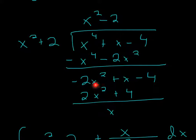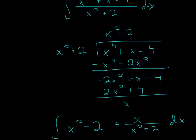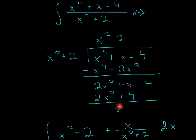The 2x squareds cancel because it's negative and positive. And then the x comes down, and then 4 and negative 4 cancel also. So we leave this alone because that's our actual answer, but we actually do have a remainder. What do we do with the remainder? Well, we put that over the denominator. So it's going to be x over x squared plus 2.